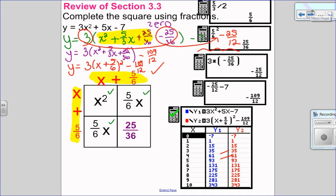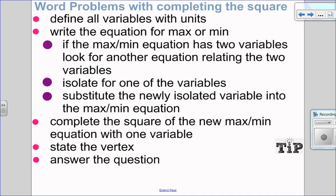Now that we've reviewed completing the square, let's jump into word problems. Here are the steps I want you to follow when solving word problems by completing the square. Start by defining all your variables with units — the units are important because when I answer the question, I want to answer it with units. Then look for the max/min equation and write it out. If the max/min equation has one variable, you're good to go on to completing the square. If it has two variables, there will be another equation relating them — I call that the isolating equation.